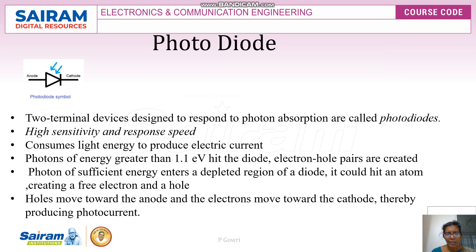A photodiode is a two-terminal device designed to respond to photon absorption. It must have high sensitivity and high response speed. Sensitivity refers to how well the device can detect the light energy falling on it, and response speed refers to how quickly the light energy is detected or converted after falling on the device.